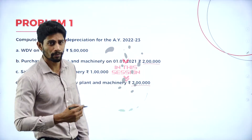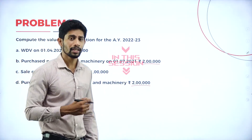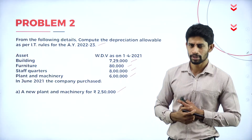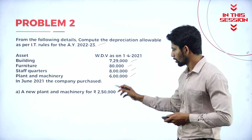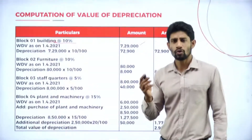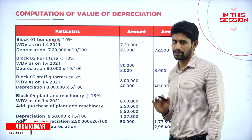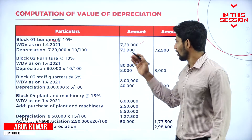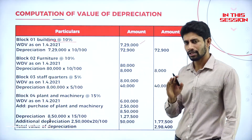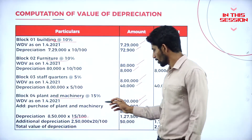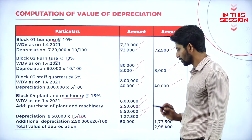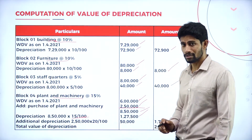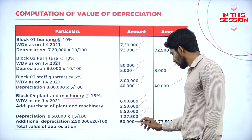What is the rate of depreciation applicable on plant and machinery? Normally it is 10%. A new plant and machinery is purchased worth Rs. 2,50,000. No building is sold in the previous year. So directly we are calculating the depreciation on 7,29,000 at the rate of 10%. On new machinery purchased, that is on 2,50,000, you are supposed to calculate 20%. You will get 50,000.